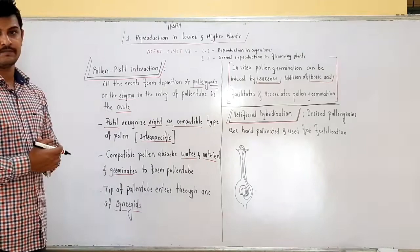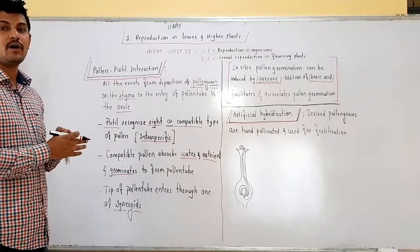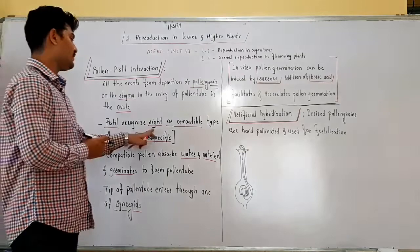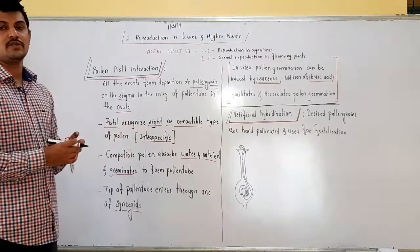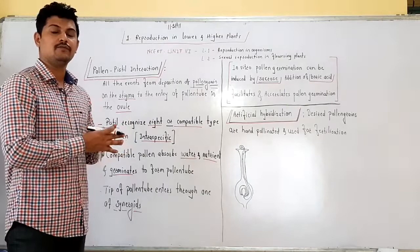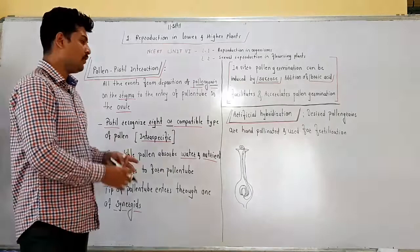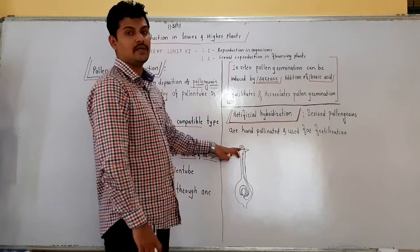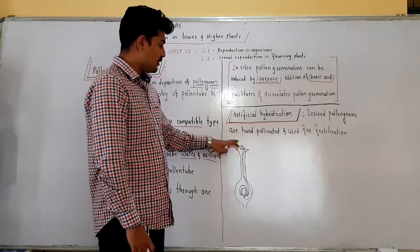But pollination does not guarantee the transfer of the right type or compatible pollen grain over the stigma. The pollen grain from the same species is called the right type or compatible type. During cross-pollination, the wrong type of pollen grain — from another species — is also transferred over the stigma. This incompatible pollen grain cannot germinate over the stigma.